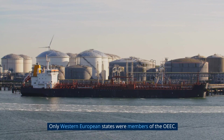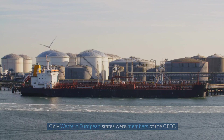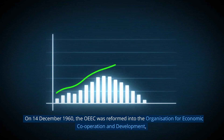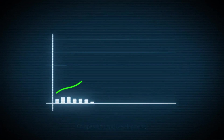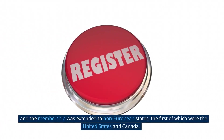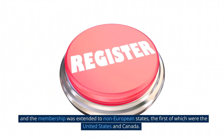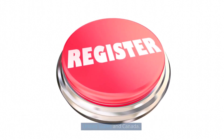Only Western European states were members of the OEEC. On 14 December 1960, the OEEC was reformed into the Organization for Economic Cooperation and Development, and the membership was extended to non-European states, the first of which were the United States and Canada.